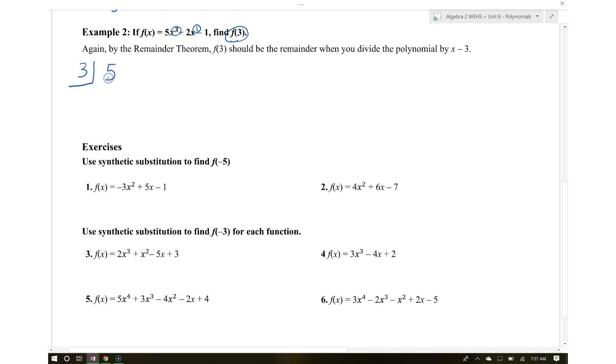We have 5. Since we're missing the x squared term, write 0, then 2, then negative 1. Bring down the 5. 3 times 5 is 15. 0 plus 15 is 15. 3 times 15 is 45.